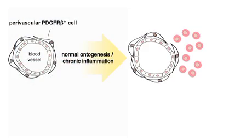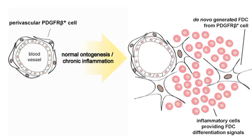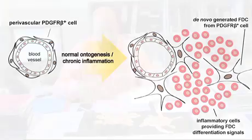So we are left with the second possibility: that follicular dendritic cells may actually be stromal, sessile, immobile cells. But if that were the case, then they must derive from ubiquitous precursors, because the follicular dendritic cells can arise everywhere in the body. So we tackled this question.